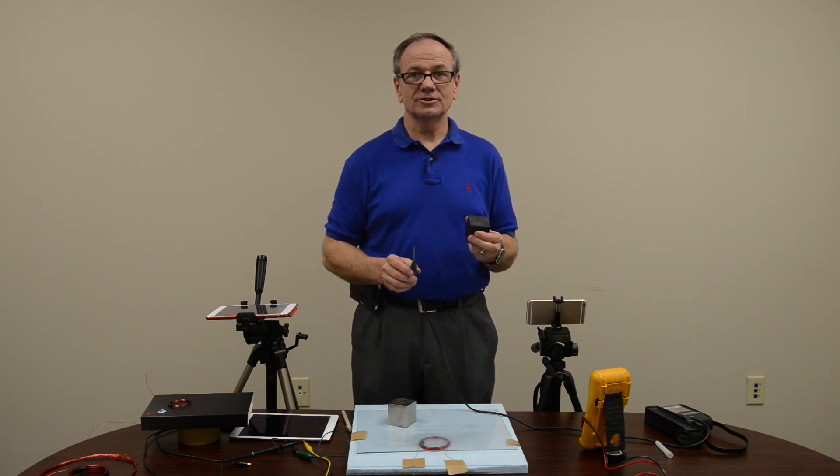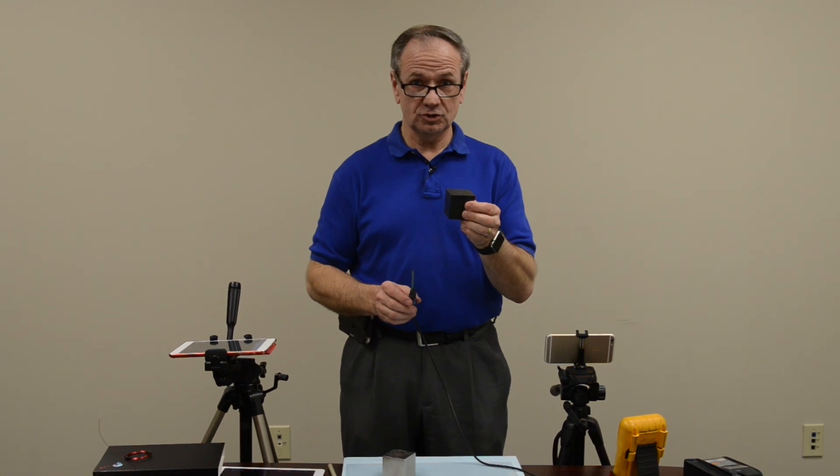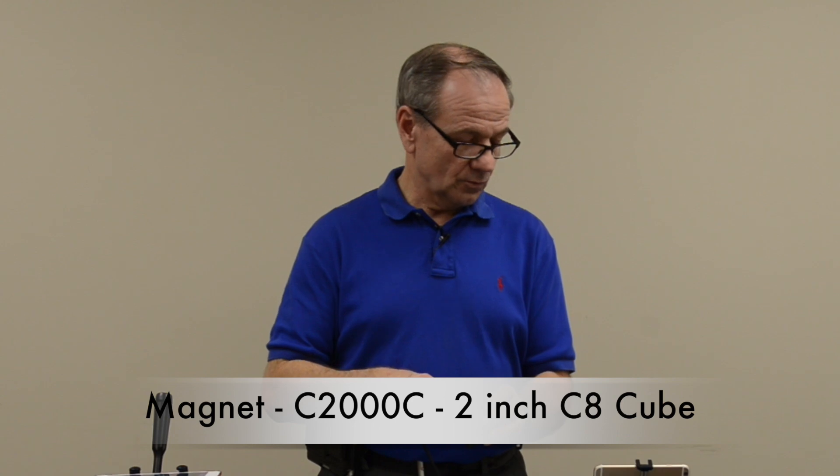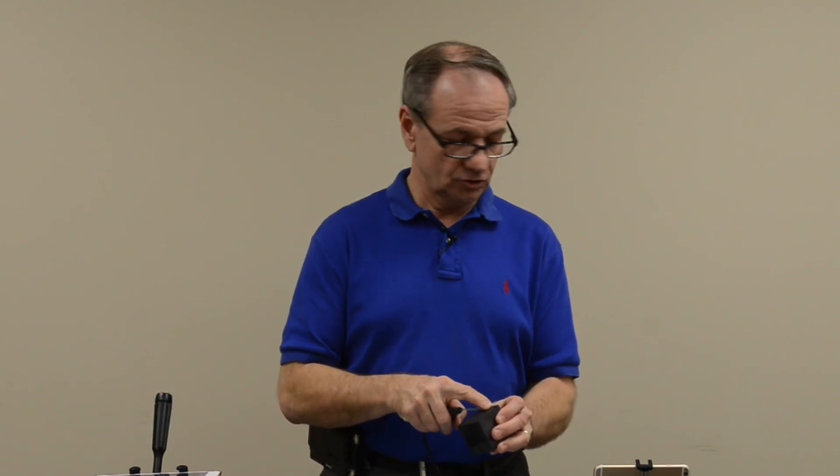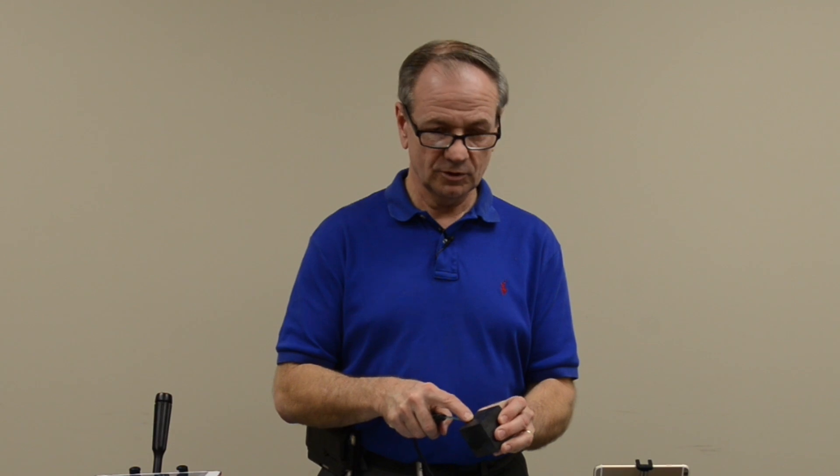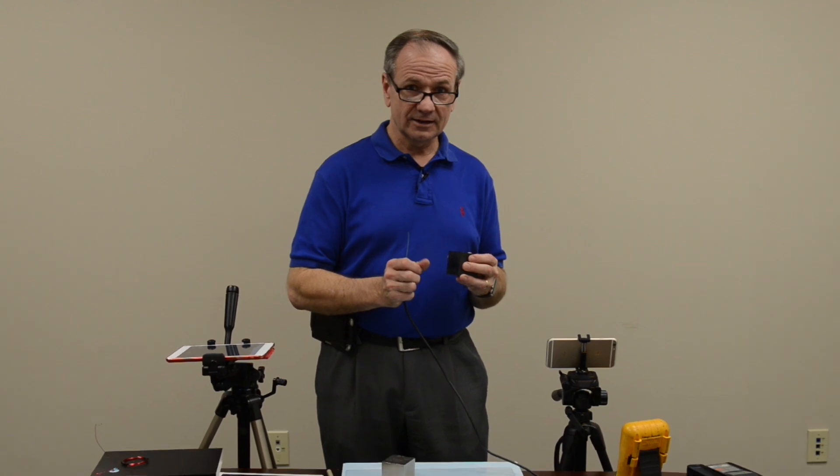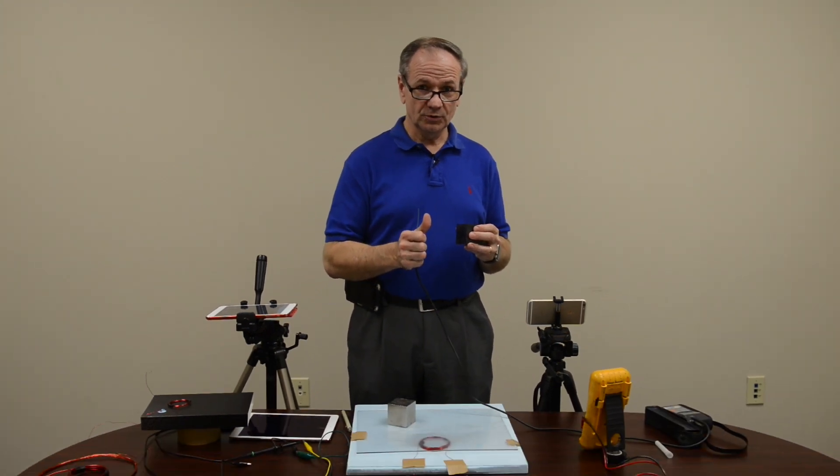The magnet's going to change the lines of flux. This is a ceramic, 2-inch cube, C8 ceramic magnet. On the surface of this magnet, it reads about 1,500 gauss, just a little bit above 1,500. This is the N52 Neo magnet, and across the surface of this, it's reading 5,300, 5,700, 5,800, somewhere in that range. So it's a little less than 6,000 gauss over the top of it, so it's about four times the flux density. Let's see how that relates to the power output that we get.